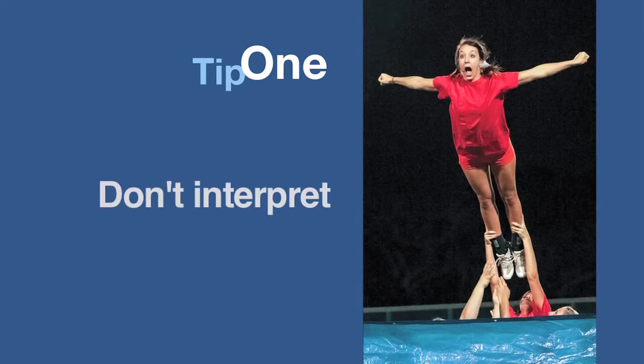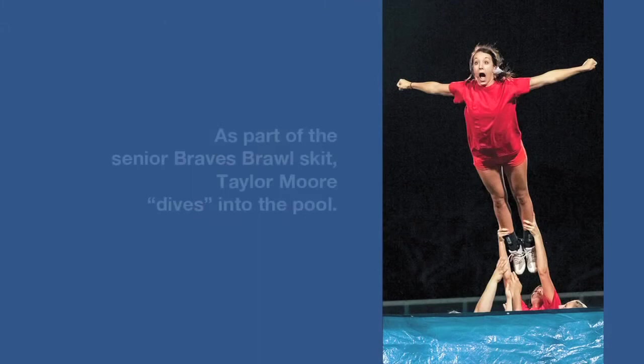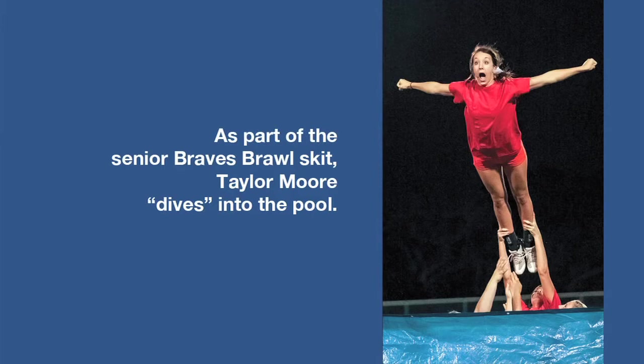Now that you've learned the ABCDs of caption writing, let's discuss a few tips. Tip one: don't interpret. Keep your captions factual to what is actually happening. Avoid interpretation — what you think is happening. In this caption, 'Fighting for first place at Braves Brawl, senior Taylor Moore shows her enthusiasm.' Really? How do you know? Stick to writing about what you know is happening. Instead, maybe write this: 'As part of the senior Braves Brawl skit, Taylor Moore dives into the pool.' Stick to the facts and let the quote add flavor to the caption.